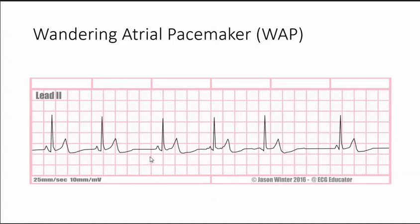Let's look here. Look at this P wave, and this one, and this one — do you see how they're all different? There is a P wave before each QRS, but they're all different. To call it a wandering atrial pacemaker, you need to have at least three different P waves.